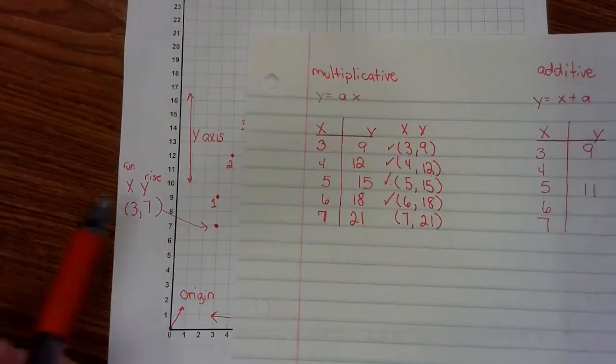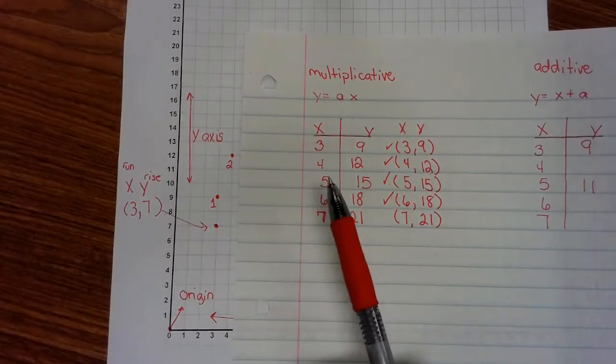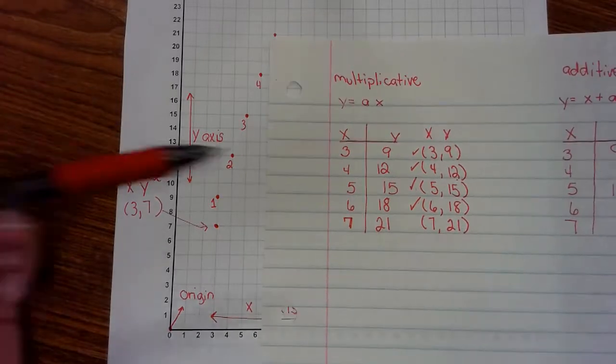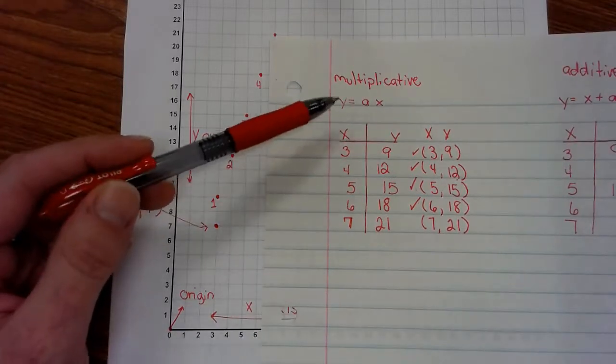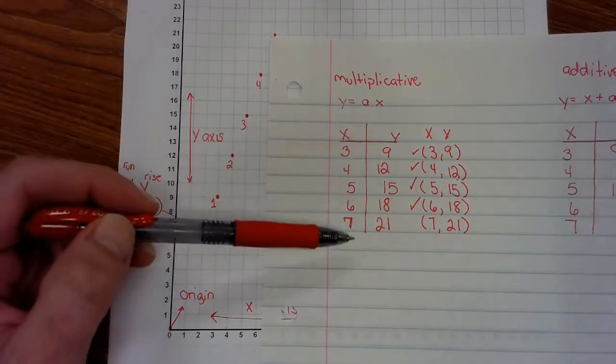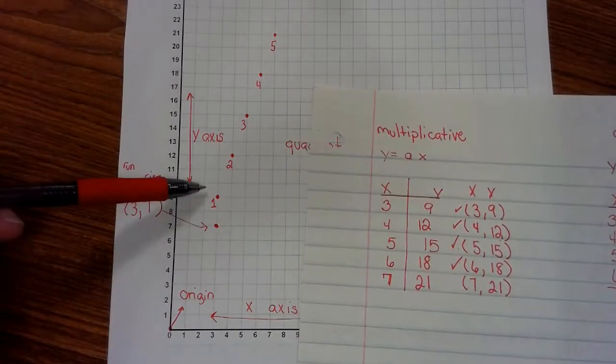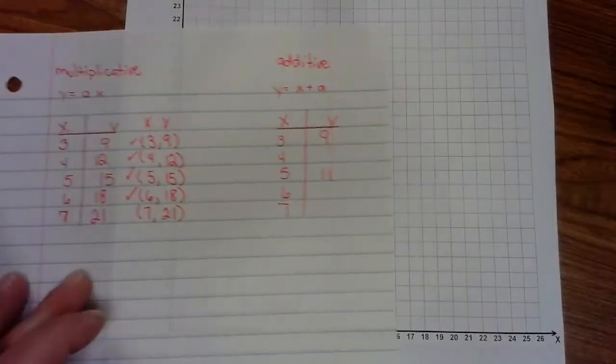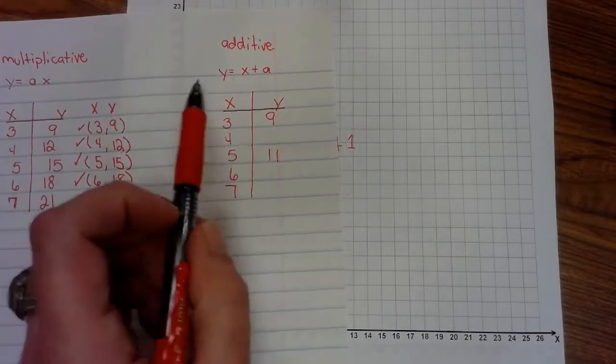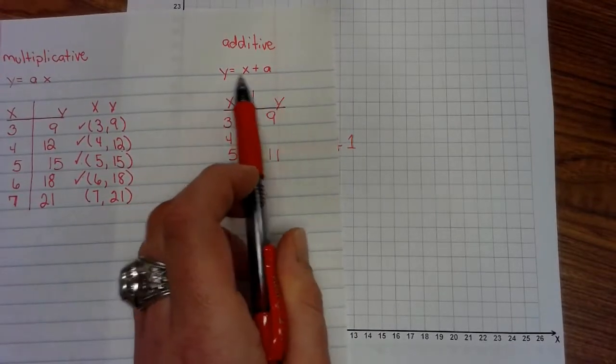And that's how we use the multiplicative patterns to get from my rule, which is multiplying by 3, to the coordinate grid. Let's try that again with the additive pattern.